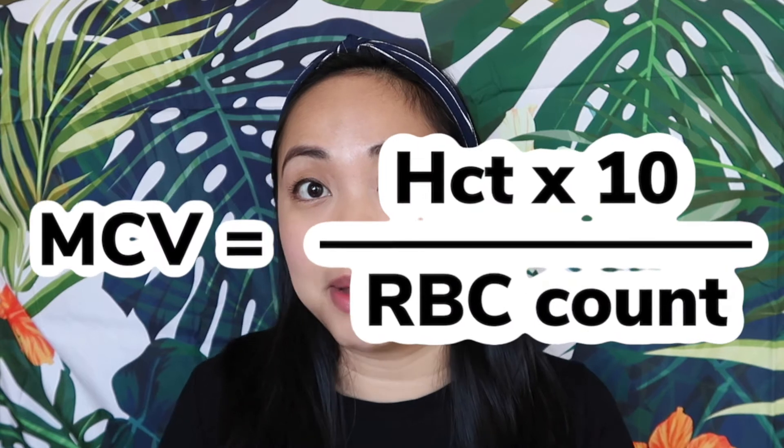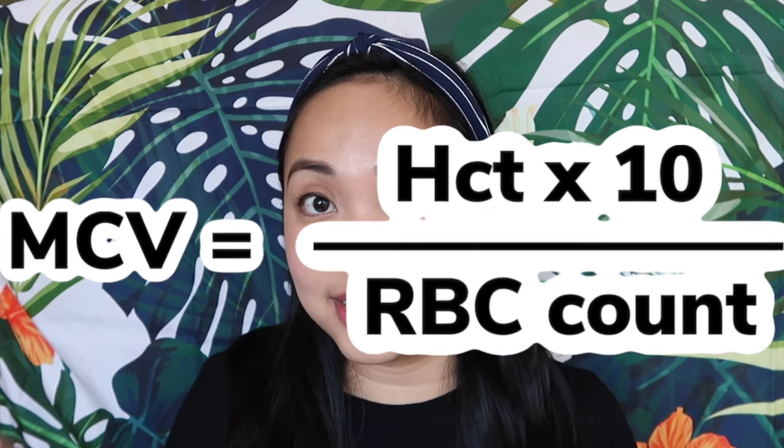The RBC indices are the mean corpuscular volume (MCV), the mean cell hemoglobin (MCH), and the mean cell hemoglobin concentration (MCHC). The MCV can be calculated by dividing your hematocrit by your RBC count, or an analyzer can provide that value. The normal range for MCV is between 80 to 100 femtoliters.